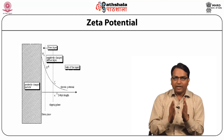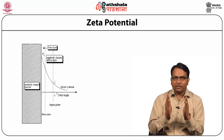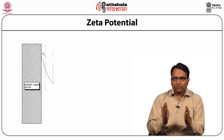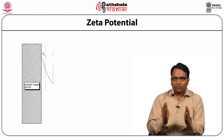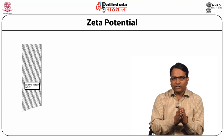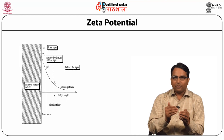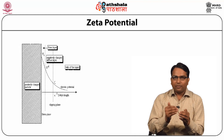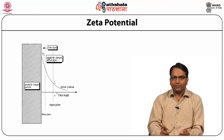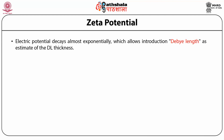Moving away from the Stern plane, there is a slipping plane. The layer between membrane and Stern plane is known as the Stern layer. The distance between the membrane and the slipping plane defines the zeta layer, responsible for zeta potential. Moving away from the membrane, there is the Debye length. Close to the membrane, there is high electric potential; as you move away, the electric potential decreases proportionally to the Debye length. Electric potential decays almost exponentially, which allows introduction of Debye length as an estimate of diffuse layer thickness.